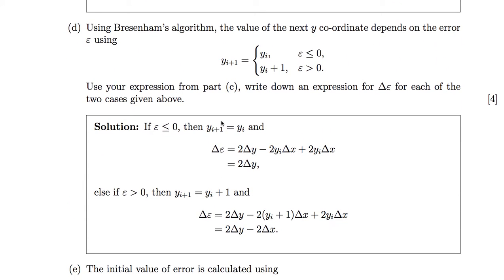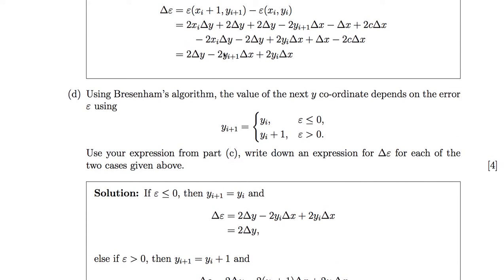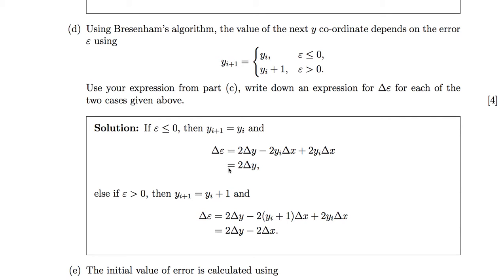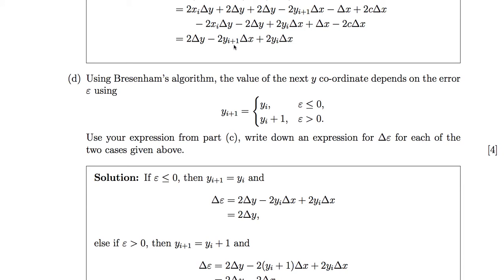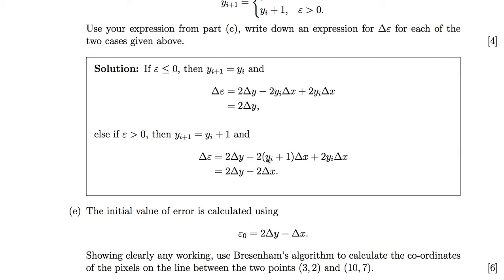Using Bresenham's algorithm, we use the error to choose between going to the pixel to the east or the pixel to the northeast. If the error is less than zero, we go east — y coordinate unchanged. If the error is positive, we go northeast — add one to y. For the east case, replacing yi+1 with yi cancels the secondary terms and the change in error is simply 2Δy. For the northeast case, yi+1 is replaced by yi+1, and after cancellation we get 2Δy minus 2Δx.